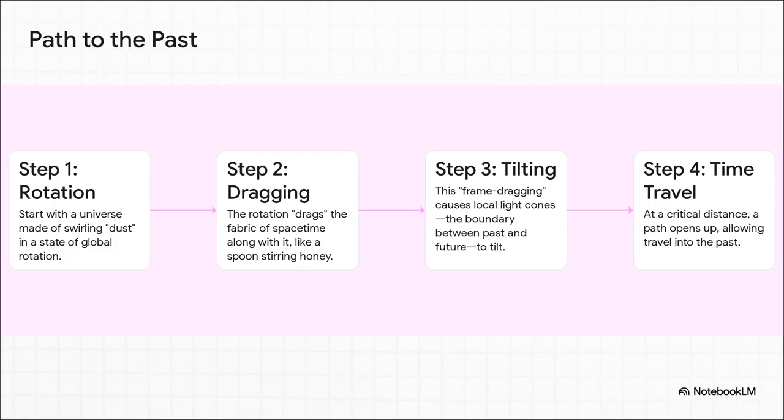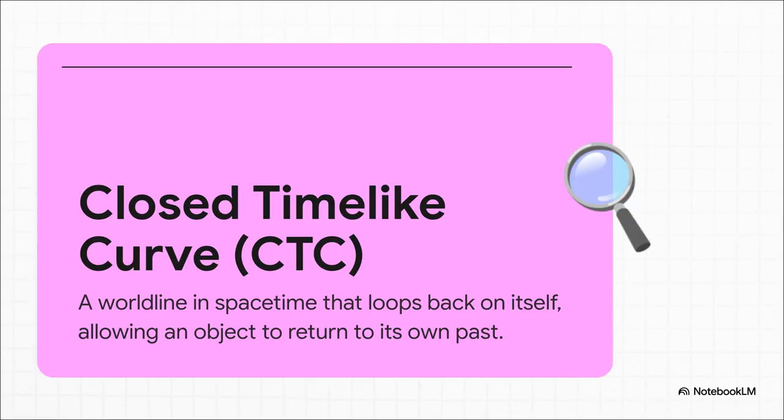The further you travel, the more those cones tilt until they tip right over. And when they tip over, something incredible happens. A path opens up. A path that lets you travel in a giant circle and arrive back where you started, but at an earlier time. This is a closed time-like curve. A genuine path into your own past.